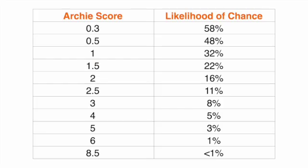Here's what the Archie score means in terms of the likelihood of luck being involved. A very low score of 0.3 gives a 58% chance of luck — not a reliable system. At the other end of the scale, a score of 8.5 gives less than 1% chance of luck, and 2.5 gives around 11%. So you can see why a high Archie score is what we're looking for. A low score means you might not want to pursue or put money on the system, whereas a high score means it's worth exploring further, perhaps with small stakes.